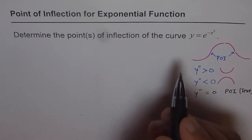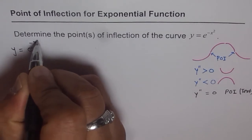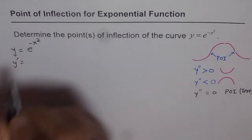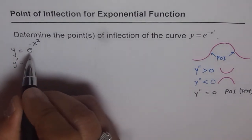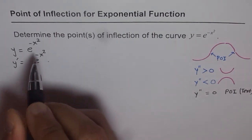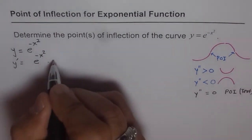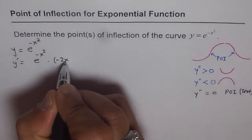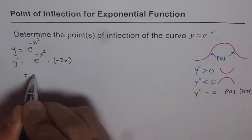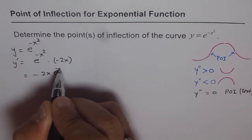The function given is y equals e to the power of minus x squared. So y dash equals the function itself, e to the power of minus x squared, times the derivative of the exponent, which is minus 2x. So the first derivative is minus 2x times e to the power of minus x squared.